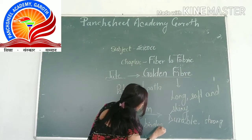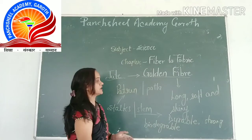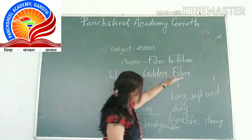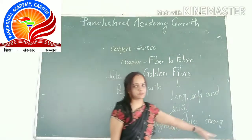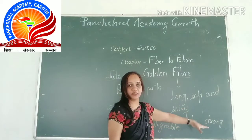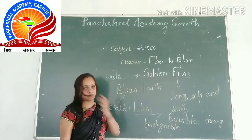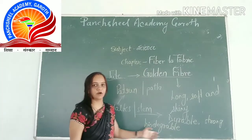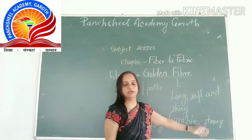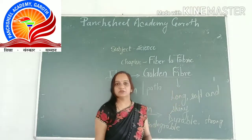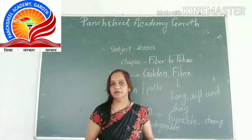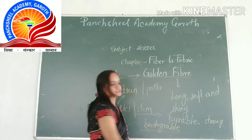What does biodegradable mean? Jute fibers are known as soft and shiny; because of their shiny nature we call them golden fibers. These fibers are also durable, strong, and biodegradable — they are safe for the environment. After use, they are broken down by microorganisms.